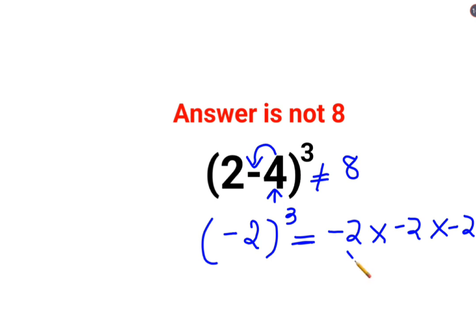So now we know negative into negative gets you a positive, multiplied by another negative number. So this becomes 4. So 4 multiplied by a negative number.